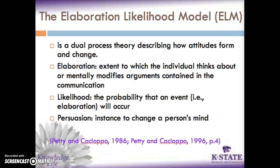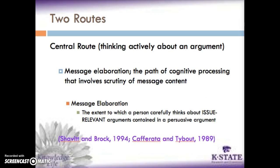The model of persuasion is a dual process theory describing how attitudes form and change. This model provides a framework to examine individual variables — need for cognition and issue involvement — in a situational context, along with variables like argument quality and message frame, that may inform the persuasion process through either the central or peripheral route. Elaboration means the degree to which an individual cognitively processes issue-relevant arguments within a persuasive communication, and persuasion is any instance in which an active attempt is made to change a person's mind.